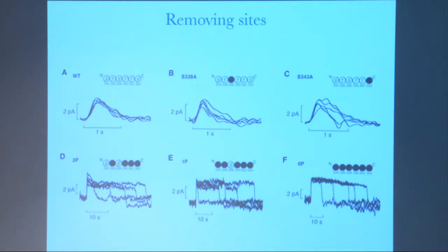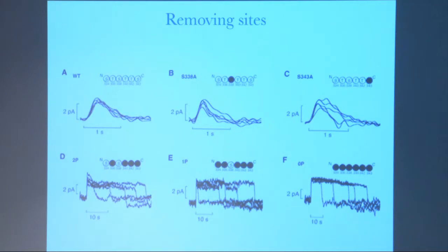They tried to knock off one site, then two, three, four, five, and even six. A mutation means the site is made nonfunctional — the chemical modification cannot happen anymore. Then they did the same experiment to see how reproducible the response is to a single photon. This is the wild type — no modifications — and you can see a nicely reproducible response. Already if you remove one site, you disrupt the response a bit; it gets more noisy. If you remove more and more, it becomes more stochastic.